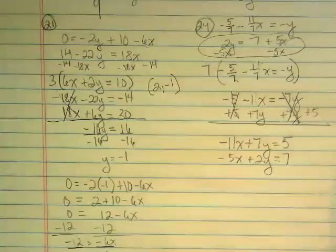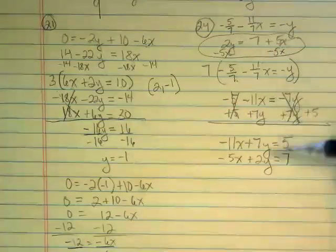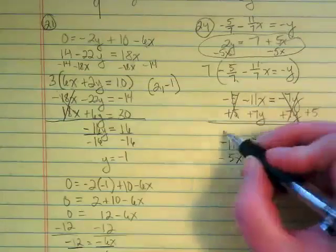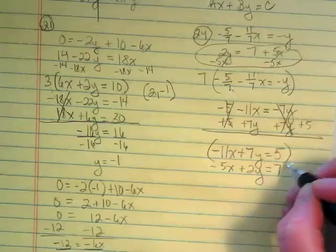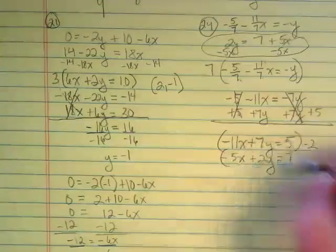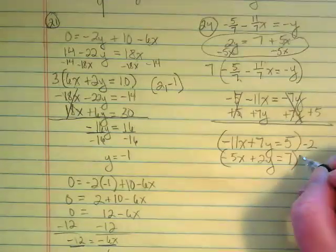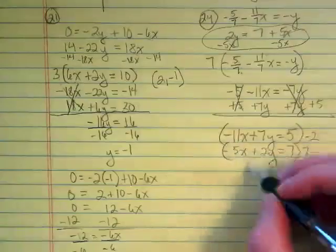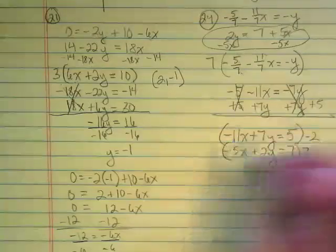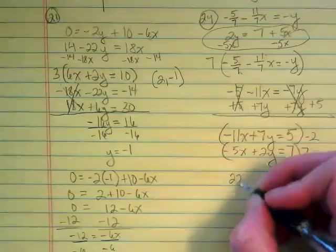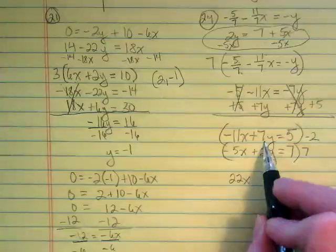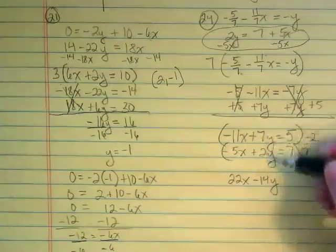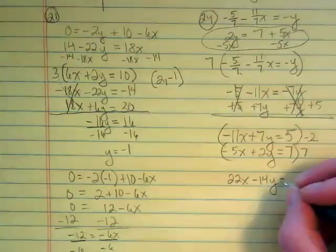Both of these equations are going to have to be multiplied by something to make it so that we can eliminate one of these terms. I think the easiest thing is to multiply this top one by negative 2 and this bottom one by 7. That's going to get us eliminating these middle terms. So negative 2 times negative 11x would be 22x. Negative 2 times 7y gives me negative 14y. And that was my goal, because I'm trying to eliminate my y term, equals negative 10.